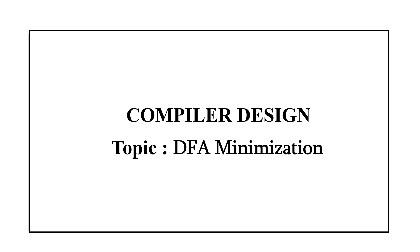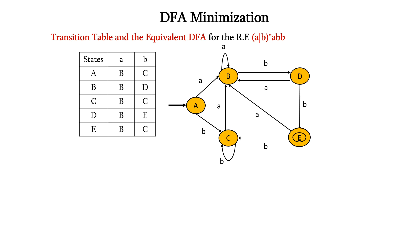Hello everyone. In our previous lecture, we discussed how to convert the epsilon NFA to DFA. Now, let us discuss about minimization of DFA. Here, we have the transition table and the equivalent DFA for the regular expression A or B closure ABB. We have seen this construction in our previous lecture. Now, let us see how to minimize this DFA using the equivalence method.